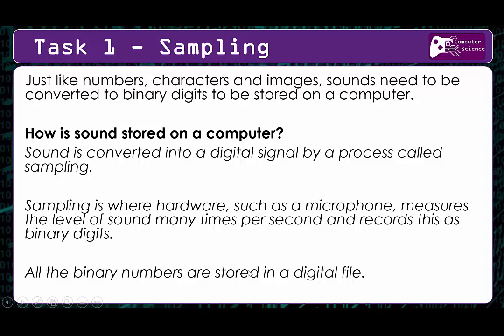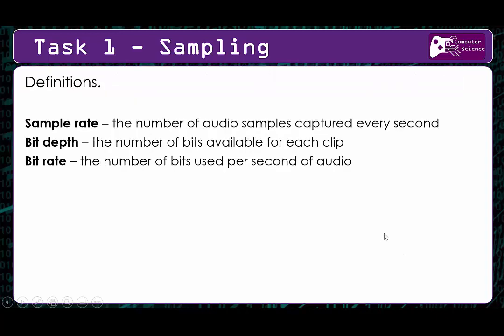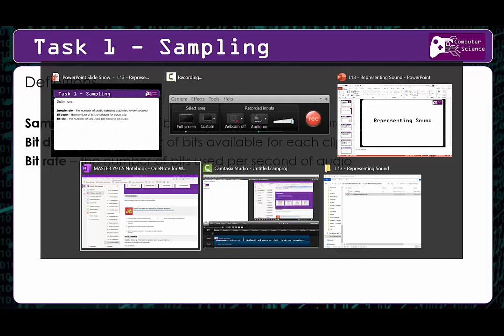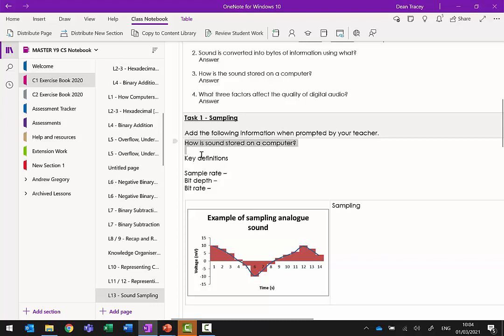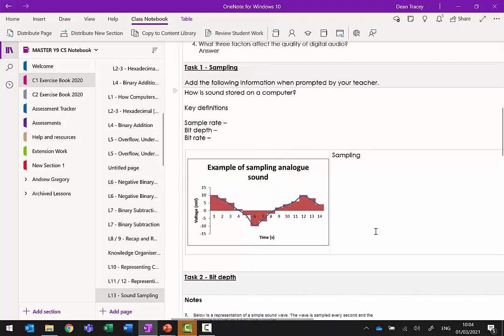All the binary numbers are then stored in a digital sound file. Key definitions: sample rate is the number of audio samples captured every second - how often the sound is being sampled. Bit depth is the number of bits available for each sound clip. Bit rate is the number of bits used per second of audio. Pause the video and write down those definitions, leaving sampling for now as we'll come back to that in a second.